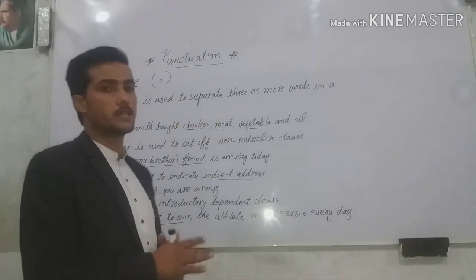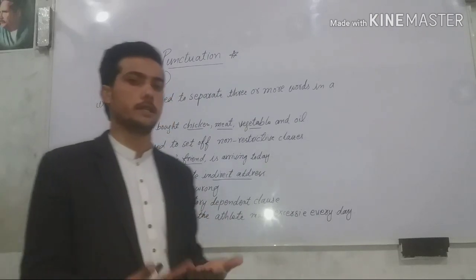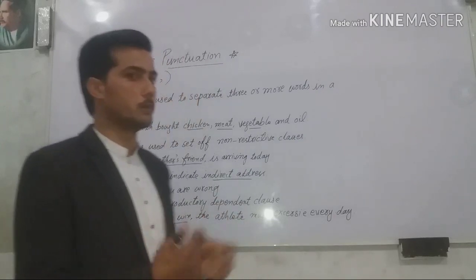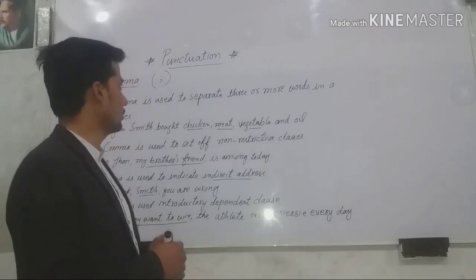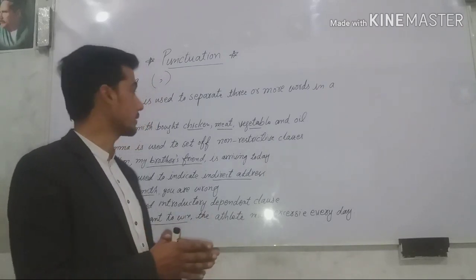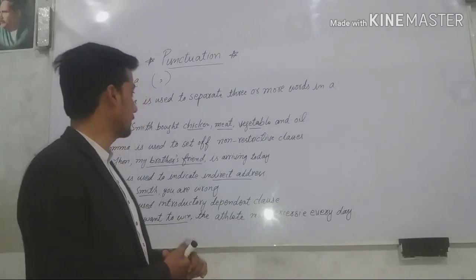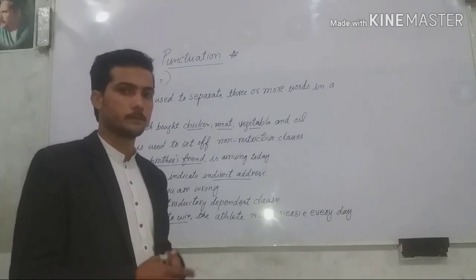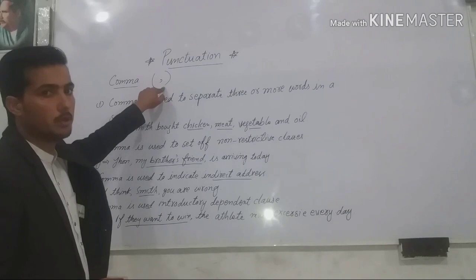So there are many examples, or we can say that punctuation that represents many ideas, like emotion, stop, pause. So one of them we will be dealing with, that is comma. So now we will come to know about what can be called comma and how comma can be used in order to show pause or whatever the punctuation in place. So just look at it, comma can be represented by this sign or symbol, you can see.